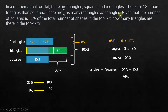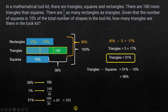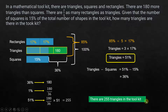The question asks how many triangles there are. Triangles represent 51%, so we find 51% by multiplying 1% by 51. This gives us 255. Therefore, there are 255 triangles in the toolkit.